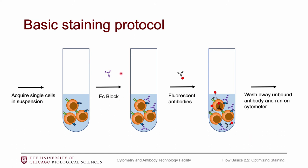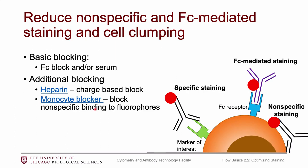Now, the second step was FC block, which we mostly covered in the first video. I just want to point out there are a lot of options for blocking. The basic one is FC block, and most of us get by just fine with only FC block. But if you're having trouble with background staining, serum is one option. Heparin is another — it blocks charge-based interactions, and I have a whole blog post on that. BioLegend also makes a monocyte blocker because monocytes can bind non-specifically to fluorophores themselves. FC block is usually fine, but if you're having problems, there are certainly other things you can add to your staining protocol.